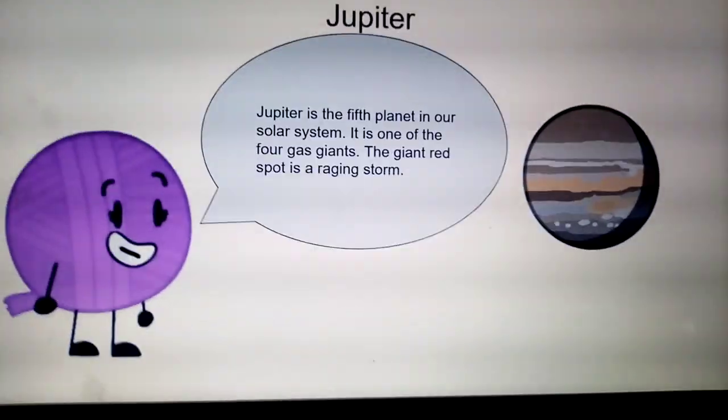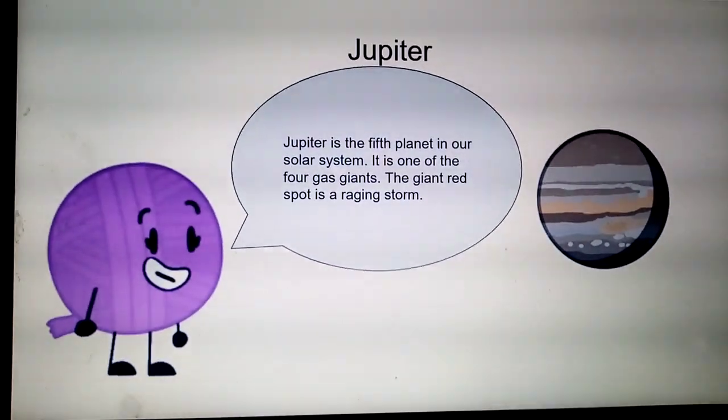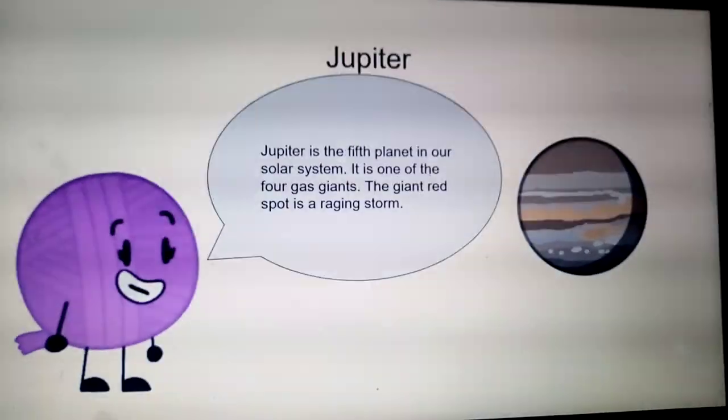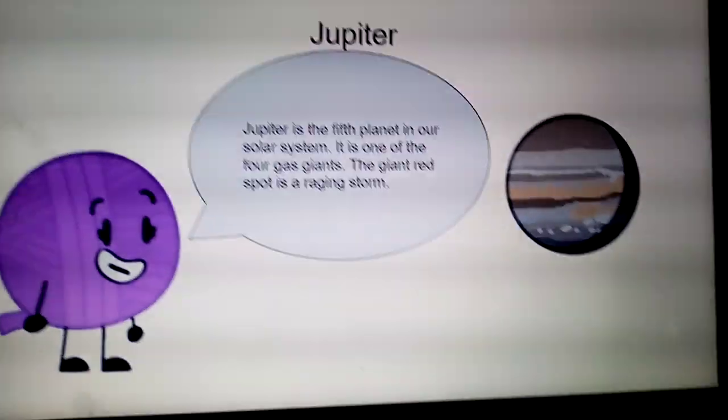Jupiter is the fifth planet in our solar system. It is one of the four gas giants. The giant red spot is a raging storm.